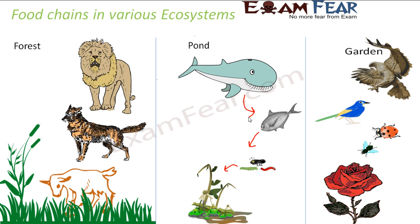Similarly, in a garden: the plants — maybe a rose plant — are fed upon by small green flies commonly seen in the garden. These small green flies in turn are eaten by ladybirds, which in turn are eaten by small birds, and these birds are eaten by a bigger bird like a hawk. So this is a food chain which exists in your garden. These are some examples of food chains in different ecosystems, and similarly you can think of food chains in many other ecosystems — in an ocean, a river, a zoo, or an aquarium — because food chains exist in every ecosystem.